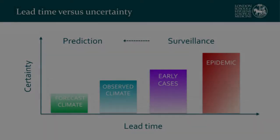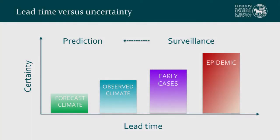We want to shift from a situation where we're relying on surveillance data only, or where we're overwhelmed by an epidemic. We want to shift from a surveillance framework to a prediction framework by incorporating climate information, which can give us some predictive lead time based on the natural lags in the system between an anomalous climate event and how that might affect mosquito populations and feed through into increased reported cases in the hospital.